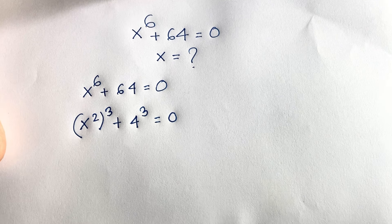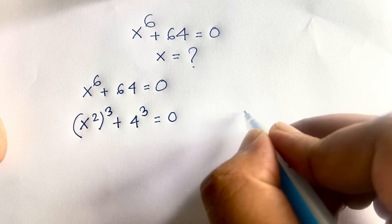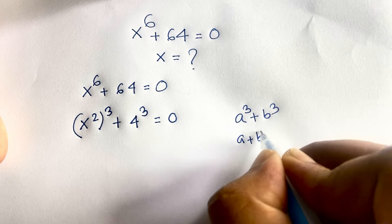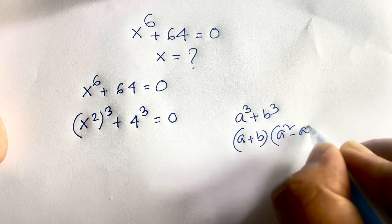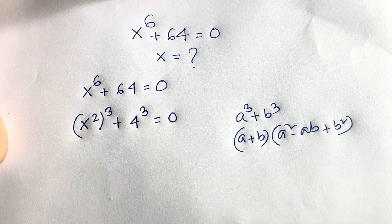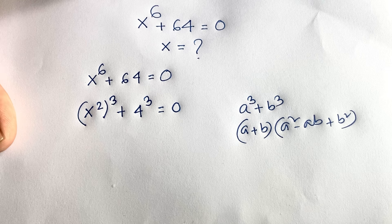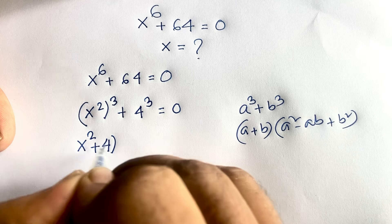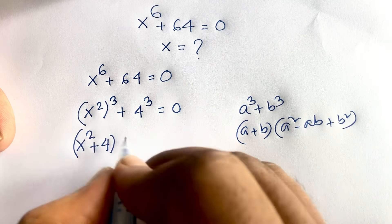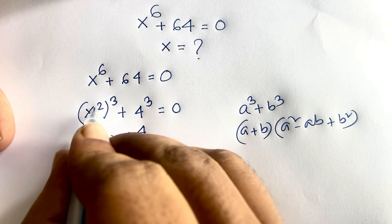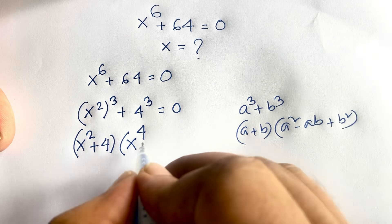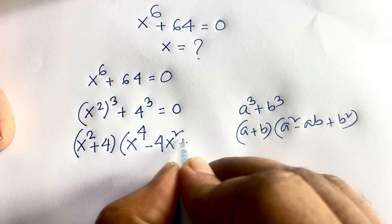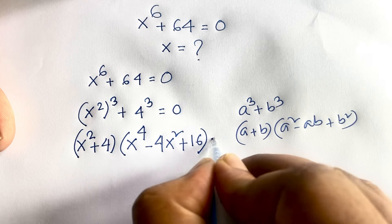We know the sum of cubes identity: a cubed plus b cubed equals a plus b, times a squared minus ab plus b squared. According to this identity, we get x squared plus 4, times x to the power 4 minus 4x squared plus 16, equals 0.